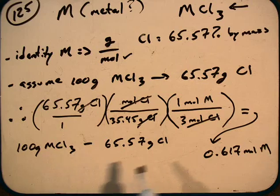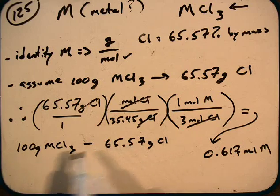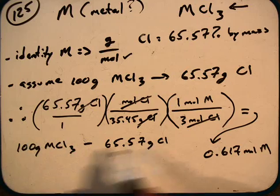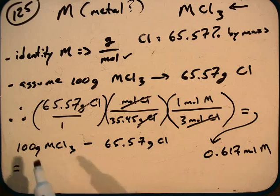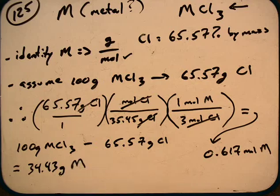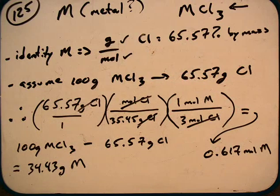So the difference of these two would then leave us with how much of that mass of M is left over. And so if we do that, we get a value of 34.43 grams of M. We just now determined the mass of that M in the sample as well. And so now we just need to plug in those values.